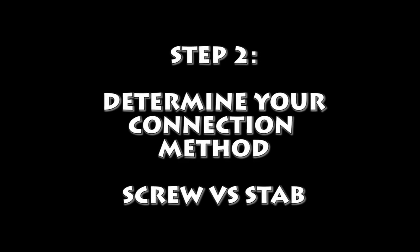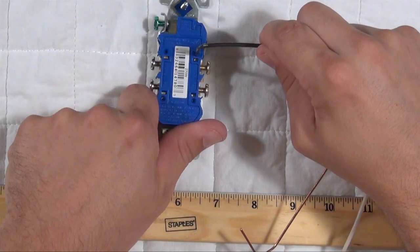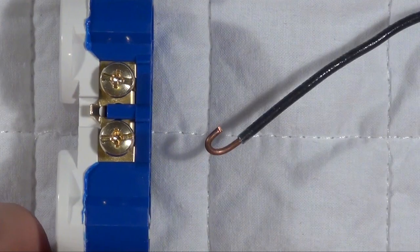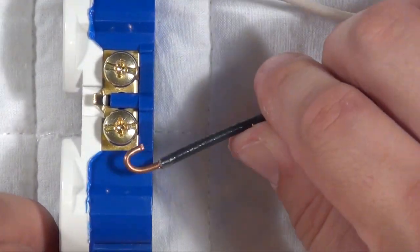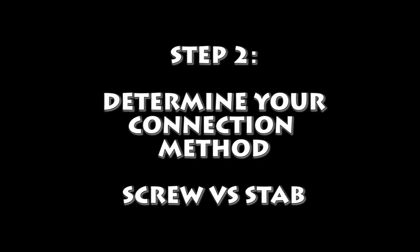Depending on the brand outlet you have purchased, there may be two different ways you can wire it. One way allows you to stab the back of the outlet for a quick connection. The other method requires wrapping the wire around tightened screws. There are pros and cons to both methods, and most professionals fall in line with one camp or the other.